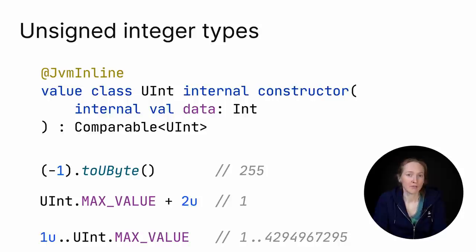Other useful types implemented via inline value classes mechanism are unsigned number types. For each primitive integer type, there is a corresponding unsigned type, like uint or ulong. These turn on negative values occupying the same memory as their regular counterparts.